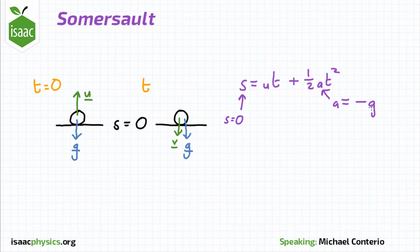The minus sign is because we've defined upwards to be positive, and the acceleration due to gravity is downwards, which must therefore be negative.